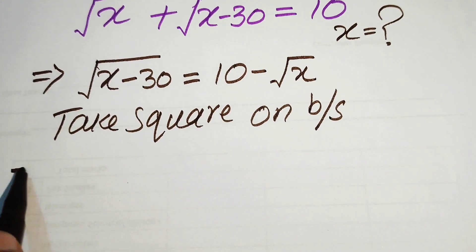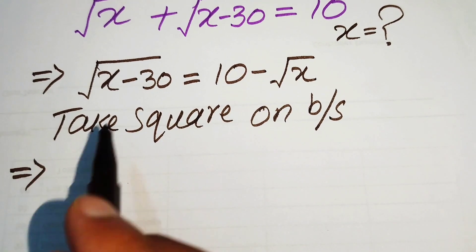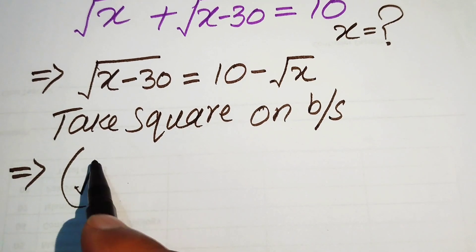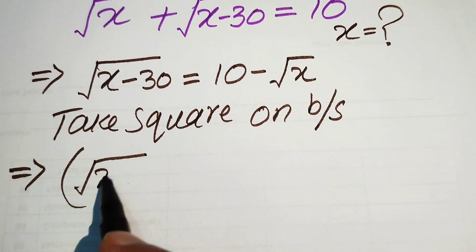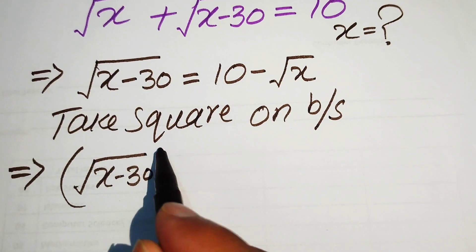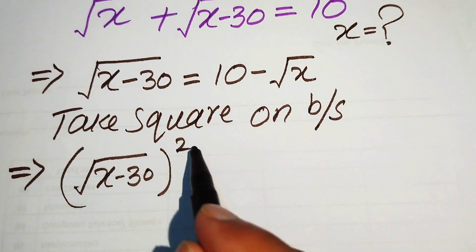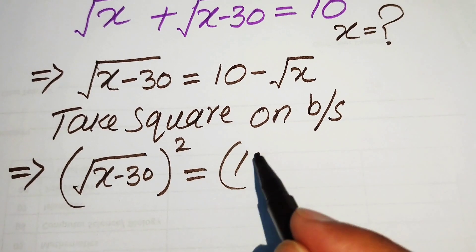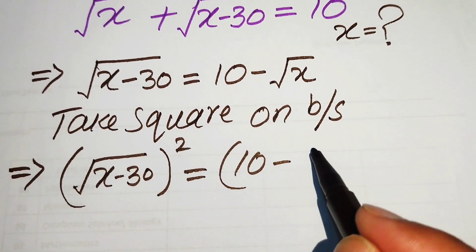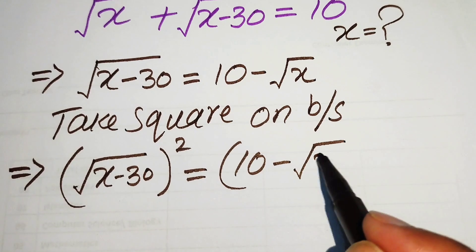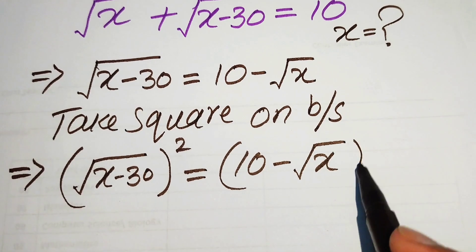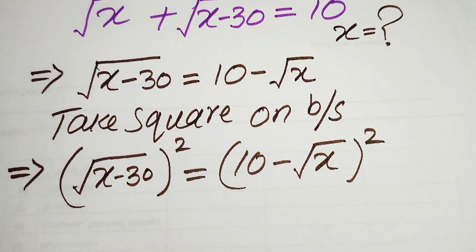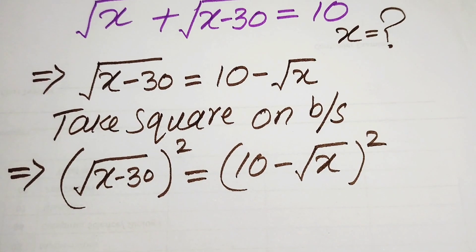When we take the square, it is written as: square root of (x minus 30), whole squared, equals (10 minus square root of x), whole squared.